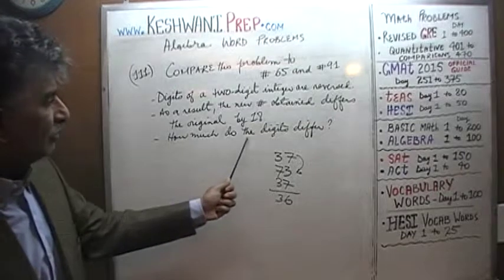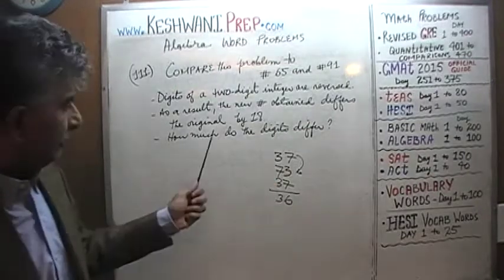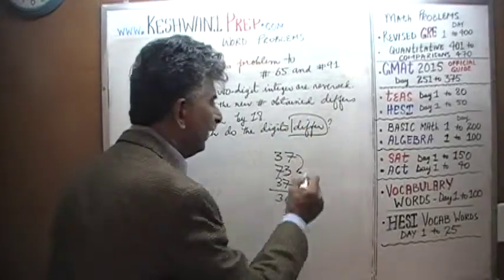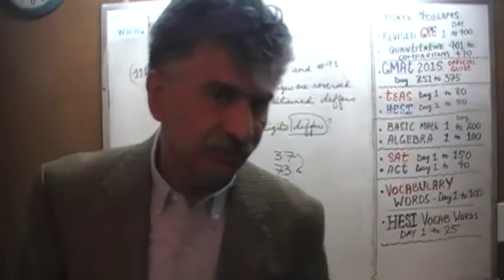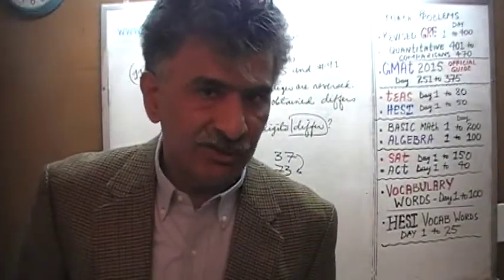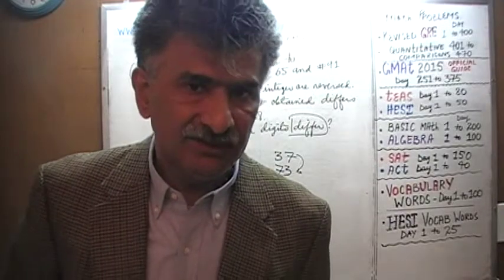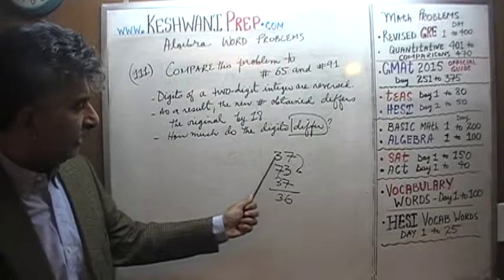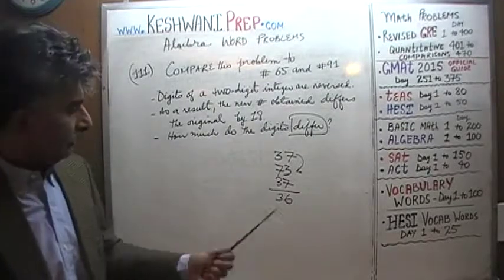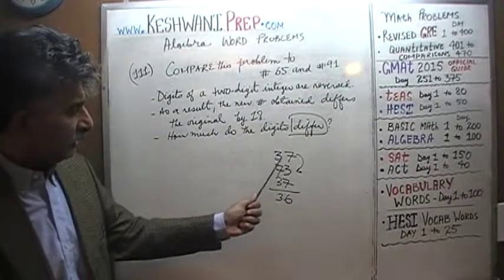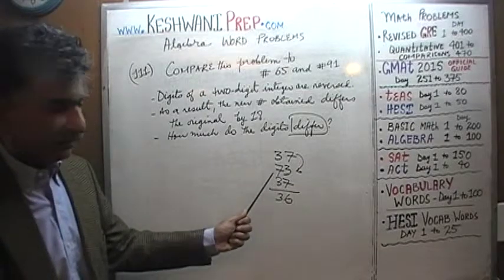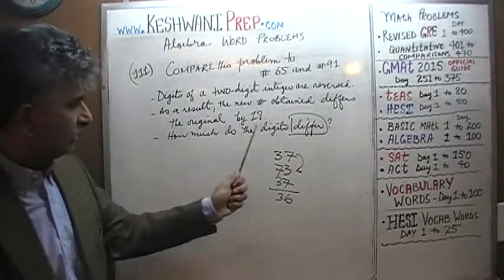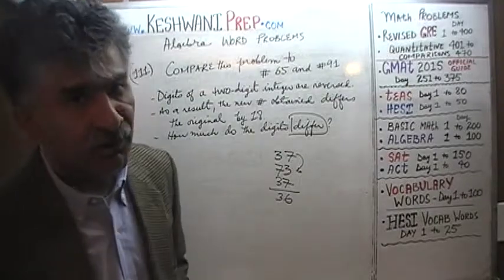The question is: how much do the digits differ? It's very important to understand the question. They're not asking us what that integer is — they're simply asking how much do the digits differ. For example, if we were dealing with 37, the digits differ by 4. Whether it is 37 or 73, the difference between the two digits is 4. And that's what they're looking for.